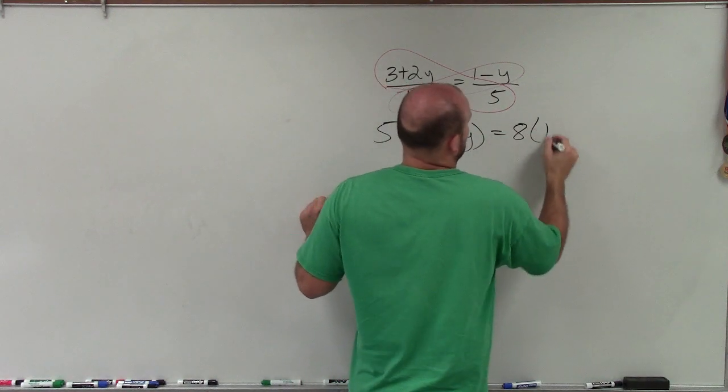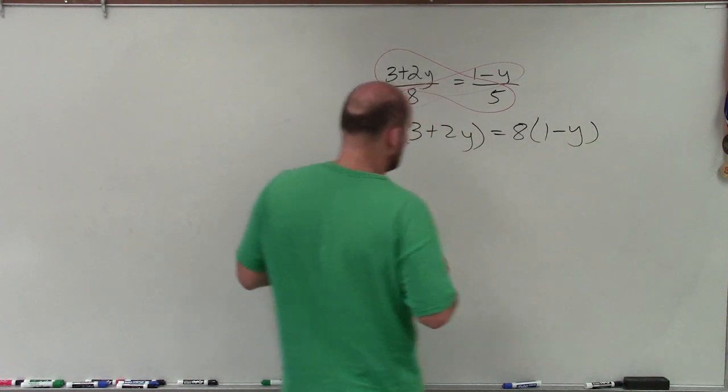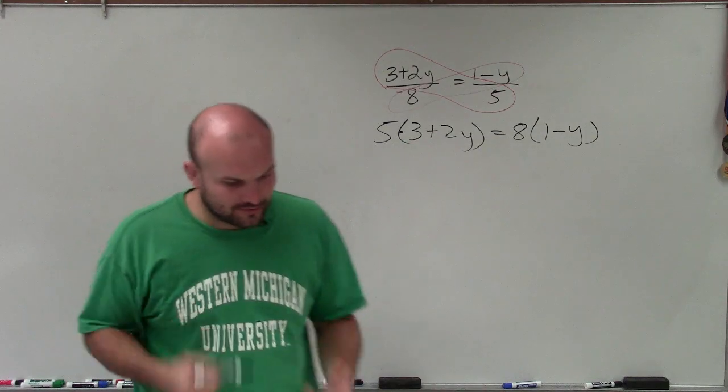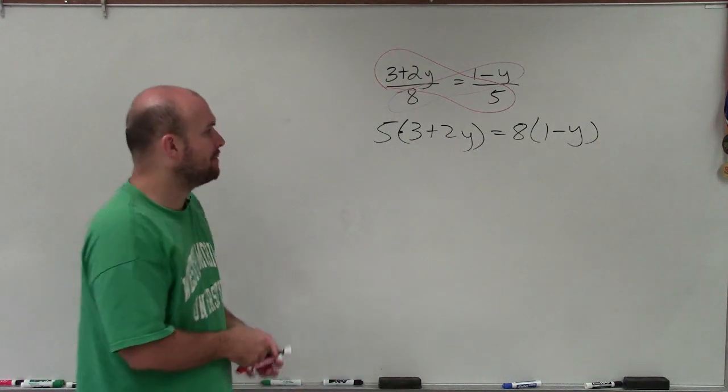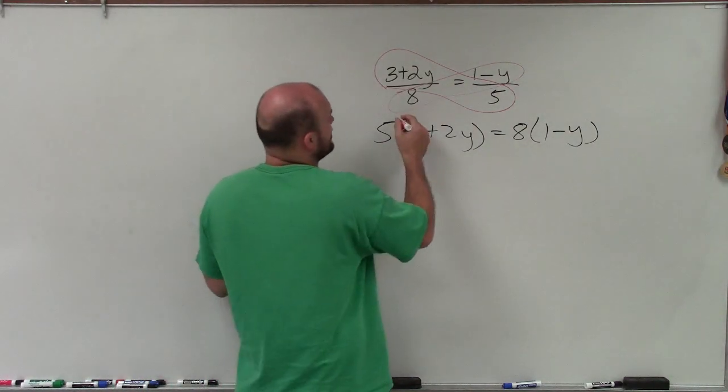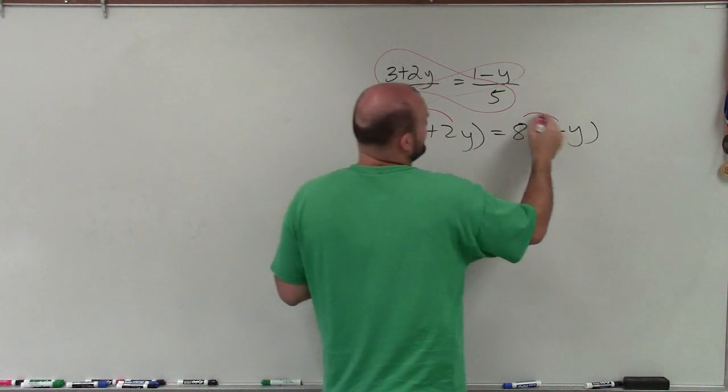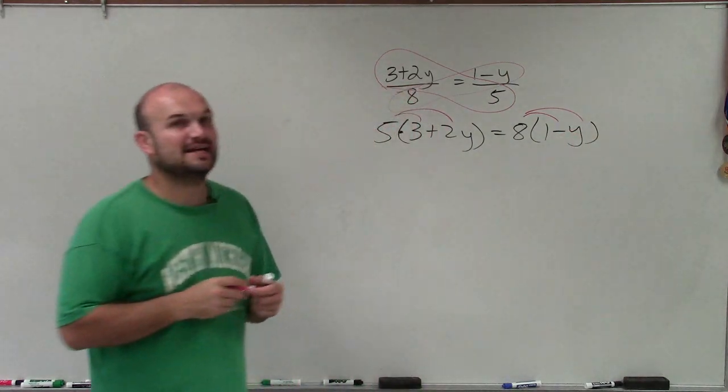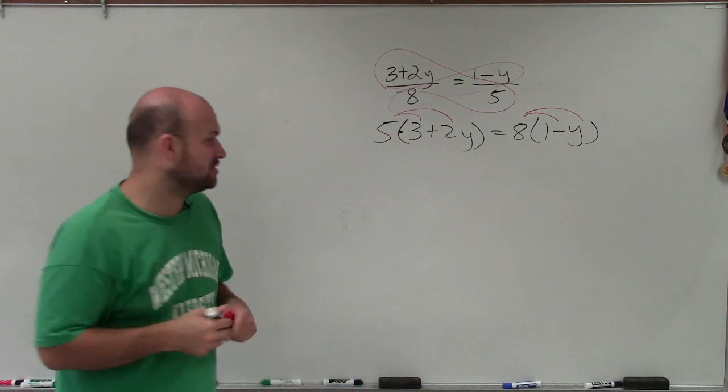Equal to 8 times 1 minus y. So it's very important, especially when you're doing a problem with proportions, that we include parentheses. You're not changing the problem. We're just showing that we need to make sure because we need to distribute our 5 and our 8 to both of our terms when we're multiplying.